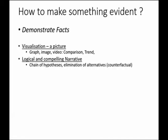We often want to link together a number of different factors to create a logical and compelling narrative. The use of logic to link together various stages of a story — to create a chain of hypotheses — is how a case is put together. And it often involves the elimination of alternative explanations, what we call the counterfactual. So we say this happened because we can prove that X, Y, Z — other things — did not happen.